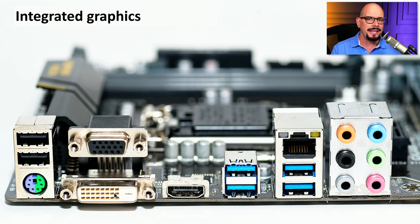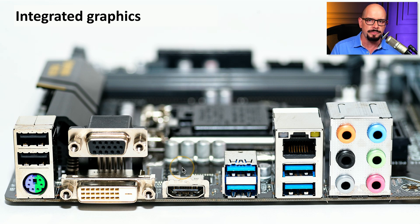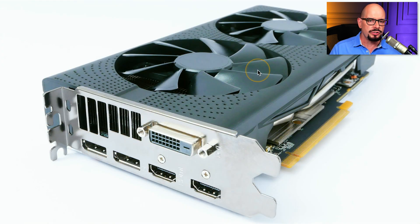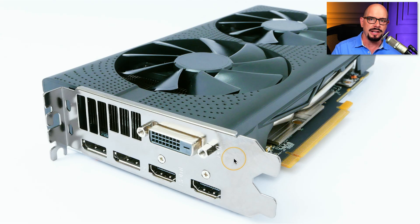The connectors associated with the integrated graphics inside of a CPU can often be found directly connected to the motherboard. We can see some of those here — there's a VGA, DVI, and an HDMI interface, and they are all connected directly to this motherboard. A separate discrete graphics card, or GPU, has a connection that fits directly in the motherboard, and it has its own video output on the card itself.